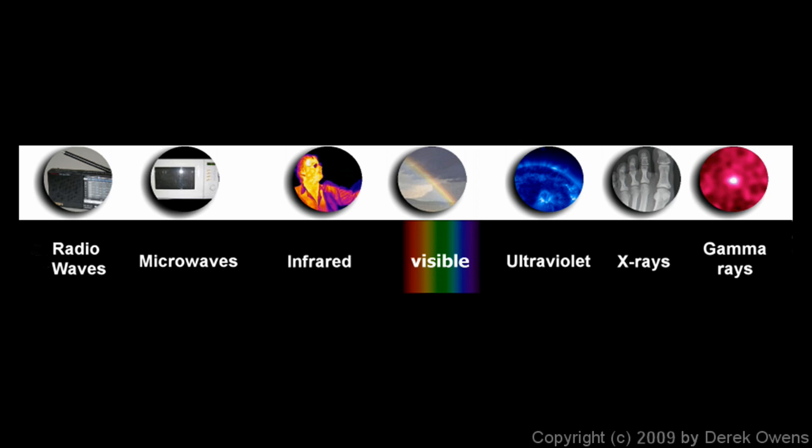But this whole picture, all of these together, are called the electromagnetic spectrum. All of these things are light waves, or also referred to as electromagnetic waves.